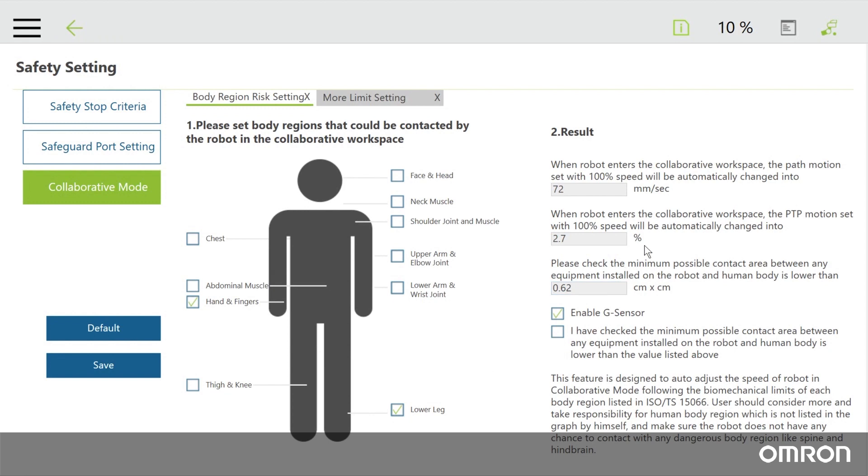The right side of this screen displays the cobot's running speed in collaborative mode. The setting values can be saved. Check the minimum possible contact area and make sure that the area where the cobot's end effector may be in contact with a person is larger than the area described. This should apply to any other equipment attached to the cobot.